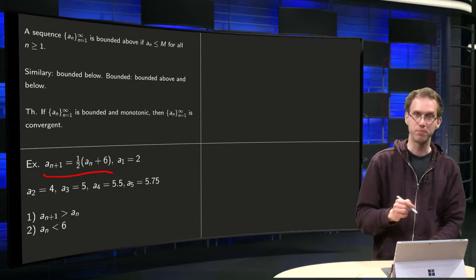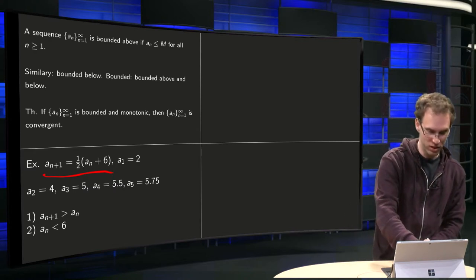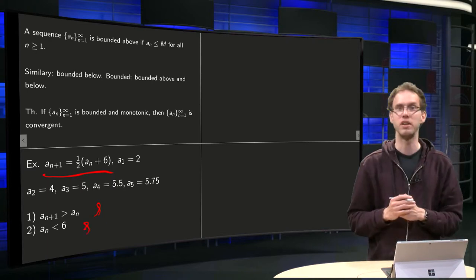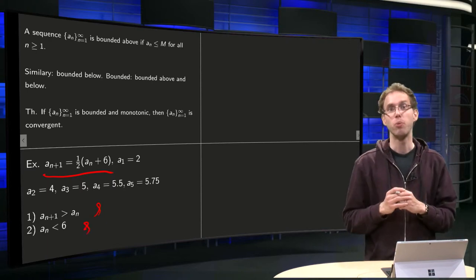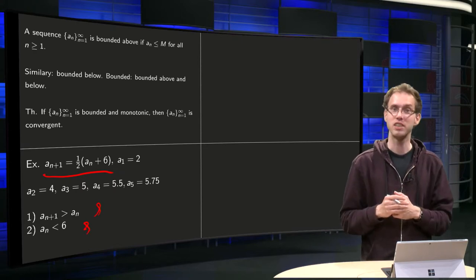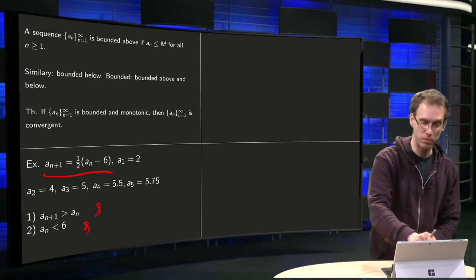First of all, we observe that we are increasing. So we have an increasing sequence and we observe that our numbers are all below 6, that we are bounded by 6. We will leave the proof of the increasing part as an exercise, and in this video we will show that we are bounded by 6.